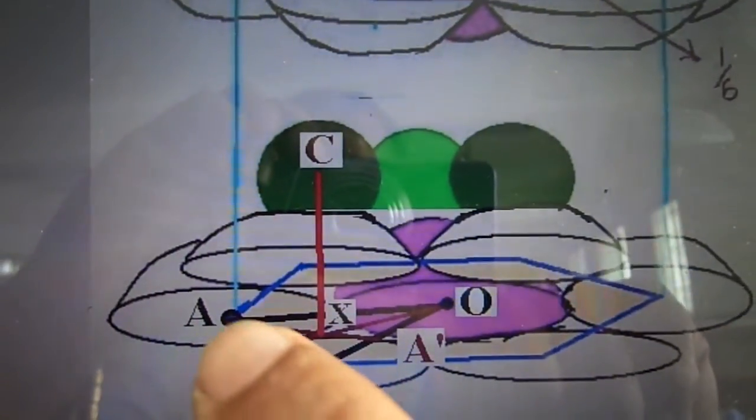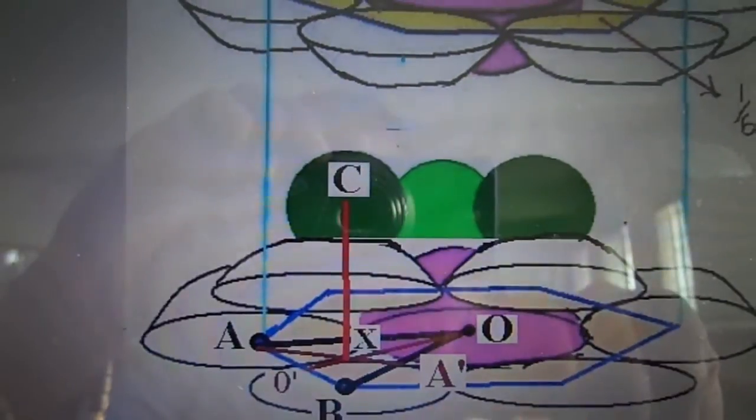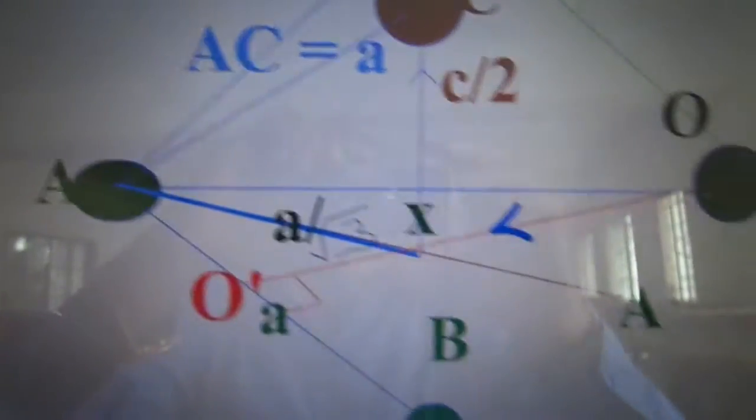Now in this regard we are about to see the figure A, B, O. The center of the atoms A, B, O is considered and that is shown over here.